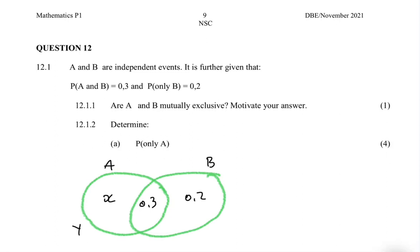12.1.1 asks: are A and B mutually exclusive? Two events are mutually exclusive if they cannot occur at the same time. For example, when you toss a coin you cannot get tails and heads simultaneously — those events are mutually exclusive. But in our instance, the probability of A and B is 0.3, so they can occur at the same time — they are not mutually exclusive.